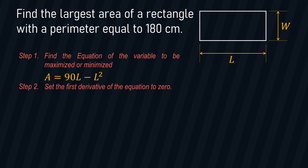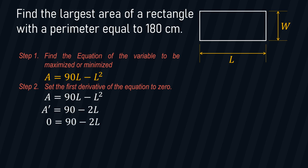Step number two: set the first derivative of the equation to zero. Taking the first derivative of A = 90L − L², we get A' = 90 − 2L. Setting its value to zero, we transpose −2L to the left side and divide both sides by 2, arriving at L = 45.